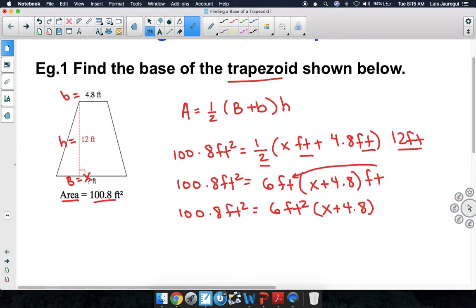Now our goal is to solve for x, so let's divide by 6 square feet on both sides. Notice that the square feet will cancel out right away. So we can cancel those on both sides of the equation. On the right-hand side, 6 divided by 6 is 1, so we can also cancel that out.